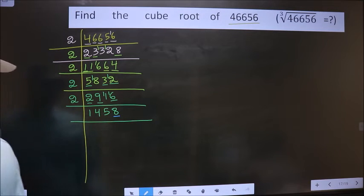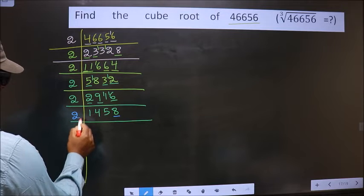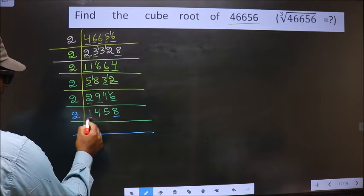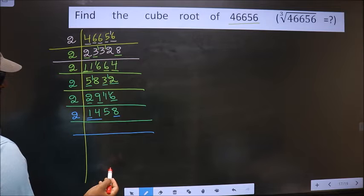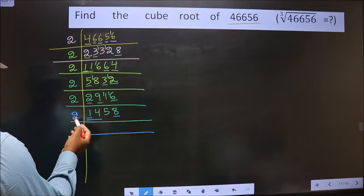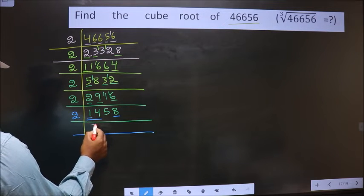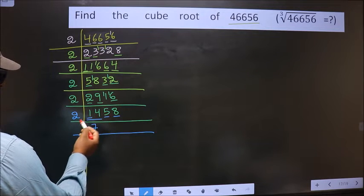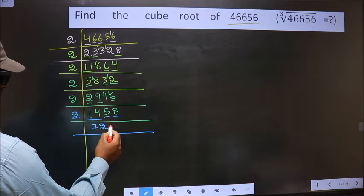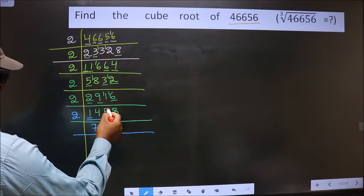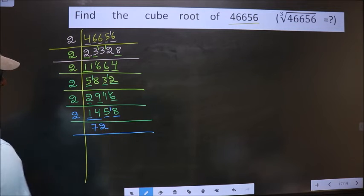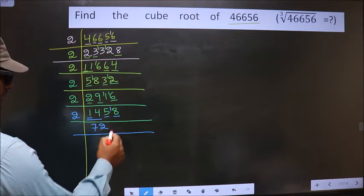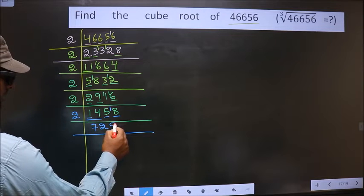For the next number, last digit is 8, which is even, so we take 2. First digit is 1, smaller than 2, so we take 2 digits: 14. 2×7 is 14. Next digit is 5: closest in the 2 table is 2×2=4; 5 minus 4 is 1, carried forward making it 18. 2×9 is 18.